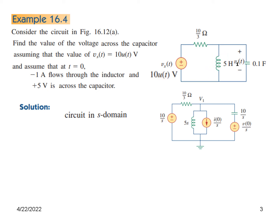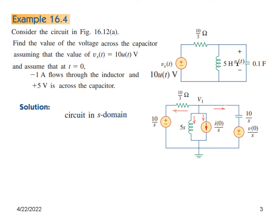We write the parallel combination and then the series combination, noting the current direction. Applying KCL, we write the node equation: V1 minus 10 over S, divided by 10 over 3, plus V1 minus 10 over S divided by 10 over S, and simplify the resulting expression.